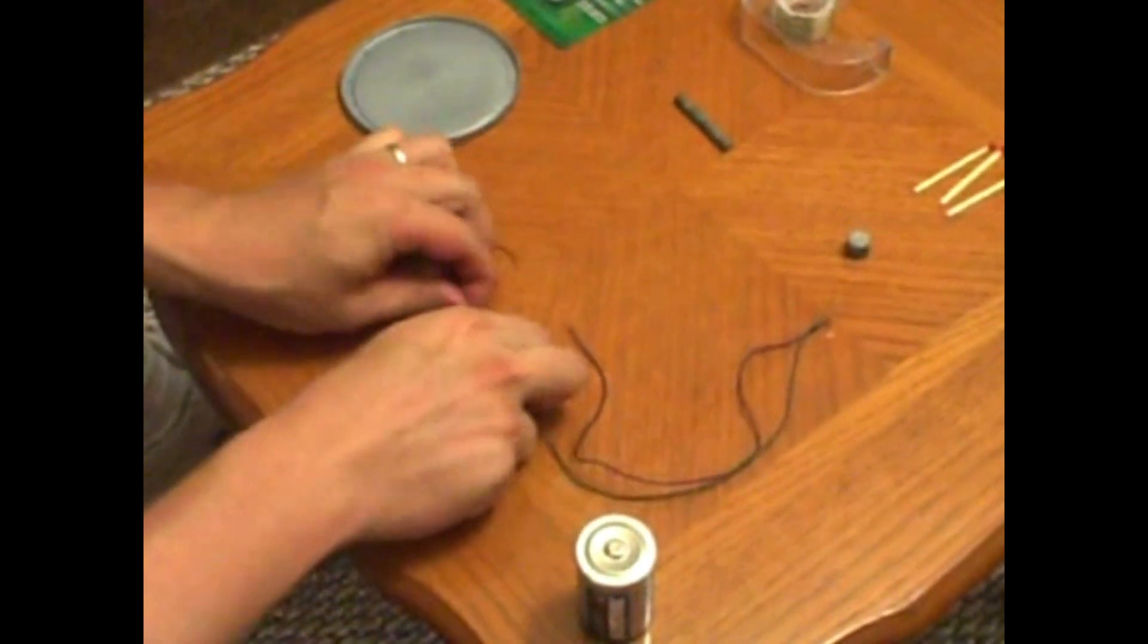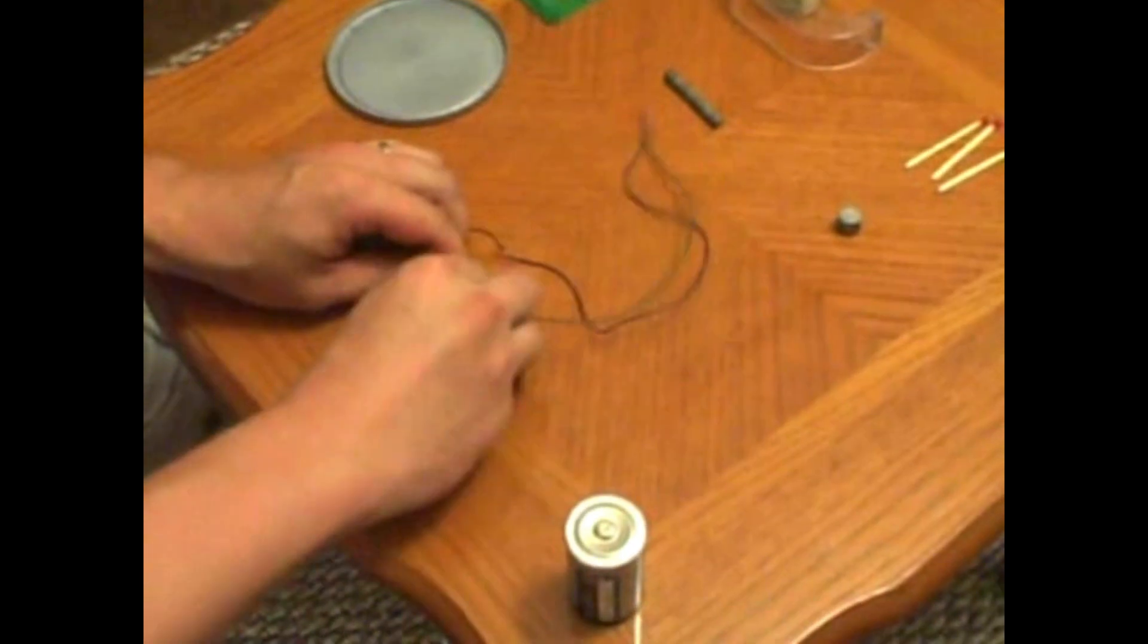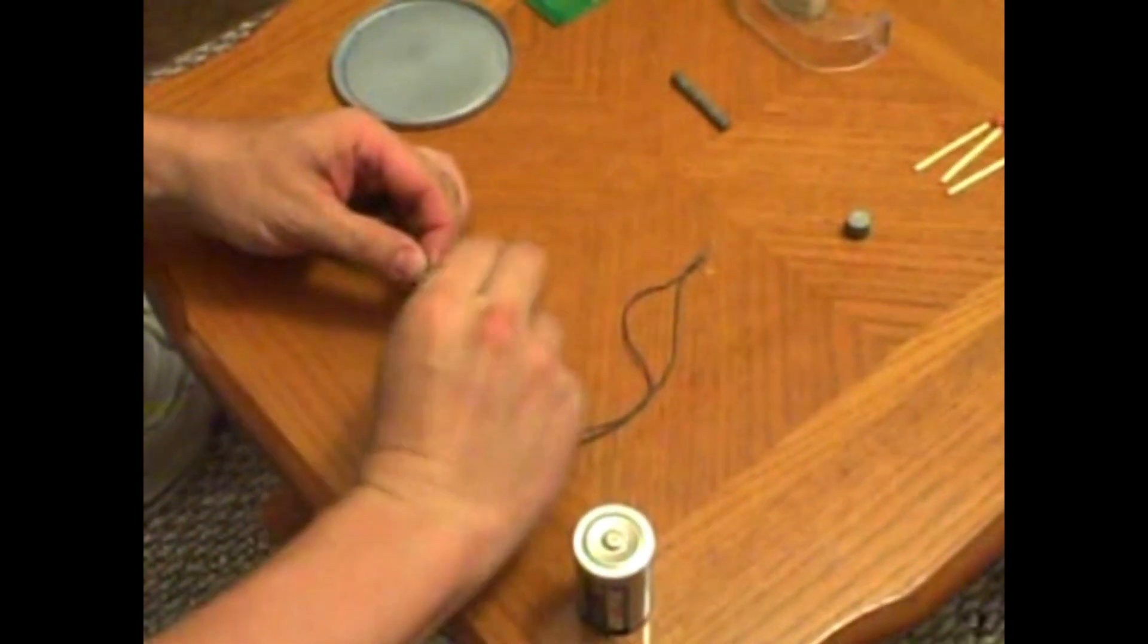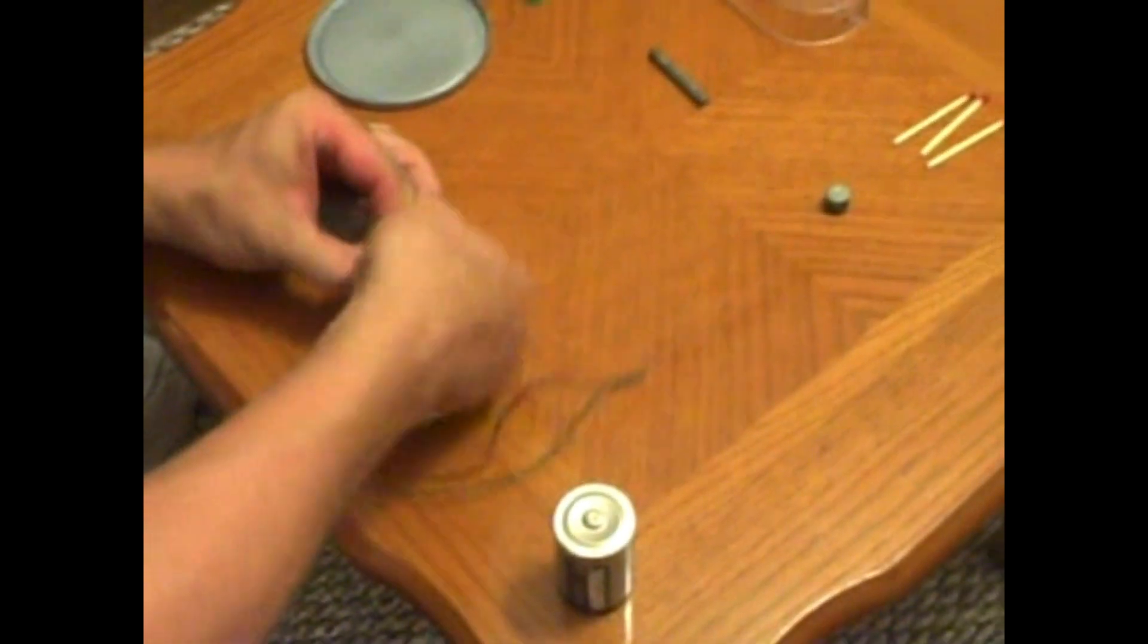Most people know if you take those same battery wires and hook them to a light bulb, and turn the motor, the motor will actually act as a small generator and power the light bulb.